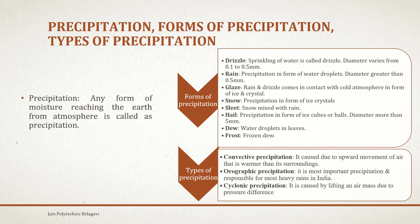Rain is precipitation in the form of water droplets. The difference between drizzle and rain: drizzle is the light spray before heavy rain, while heavy precipitation with larger water droplets is called rain. The diameter of rain droplets varies from 0.5 mm and may go above that. Glaze is a combination of both drizzle and rain.